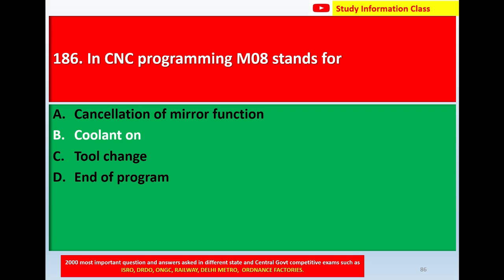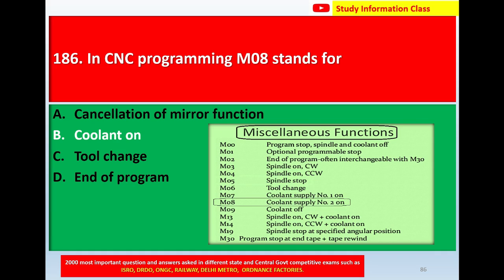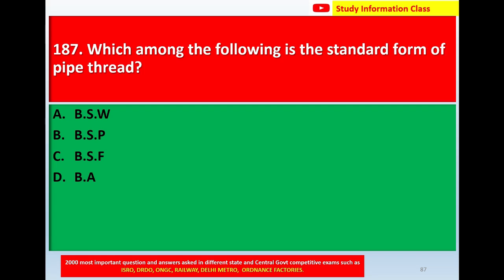The correct answer is option B: coolant on. In CNC programming miscellaneous functions, M08 stands for coolant supply number two on. For question 186, M08 stands for coolant on.